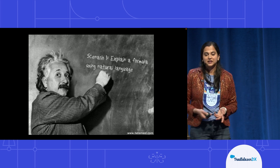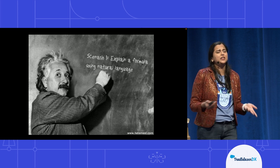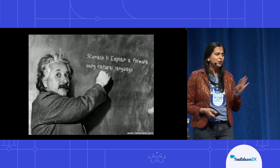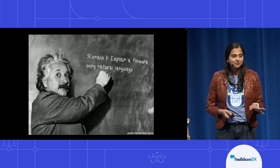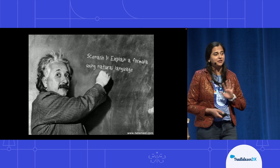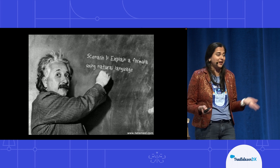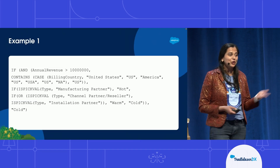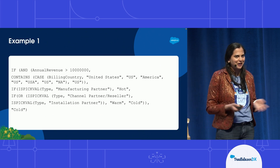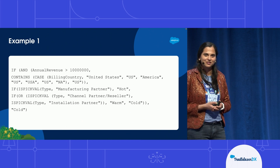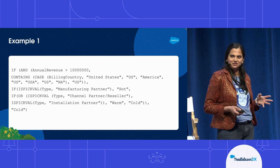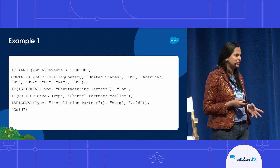Scenario one: explaining a formula using natural language. It's really hard to just look at a formula and know what it does — especially when someone else has written it, which happens all the time. Admins have to look at formulas they did not write. And by the way, I have trouble understanding formulas I've written myself just a month later. Can anyone tell me what they think this formula does? I'll give you a little bit of time — raise your hand and guess.